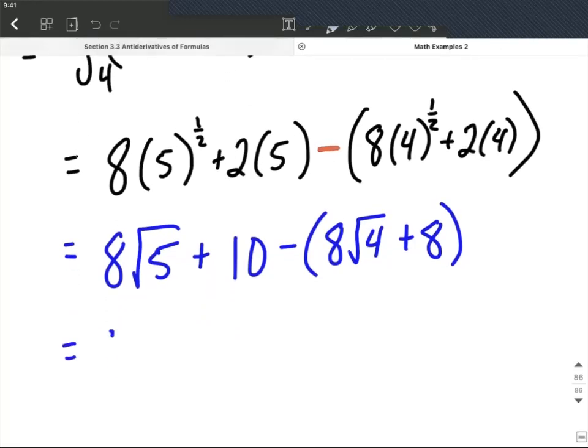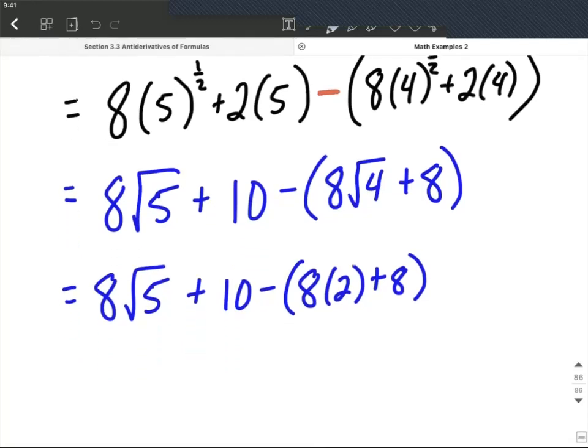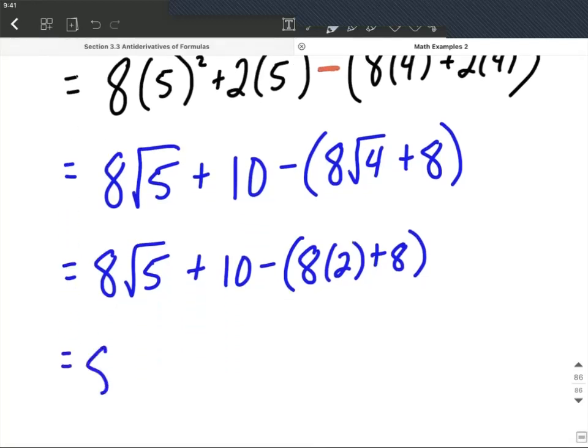Cleaning this up a little bit further. Can't do much with that √5, but on the inside of this set of parentheses, we can say that's 8 times 2 plus 8, which will be 8√5 + 10.